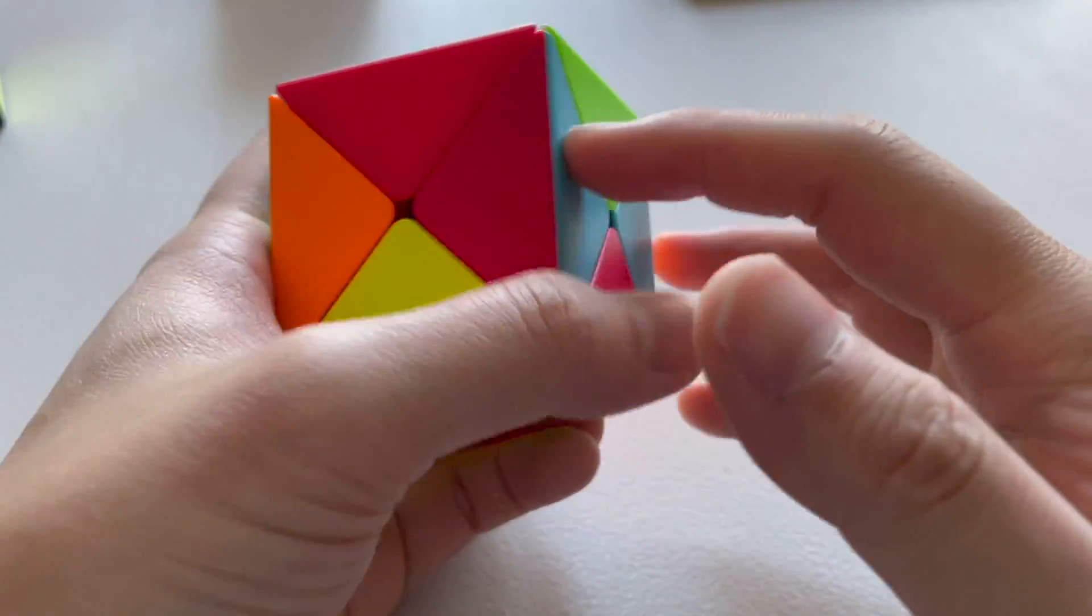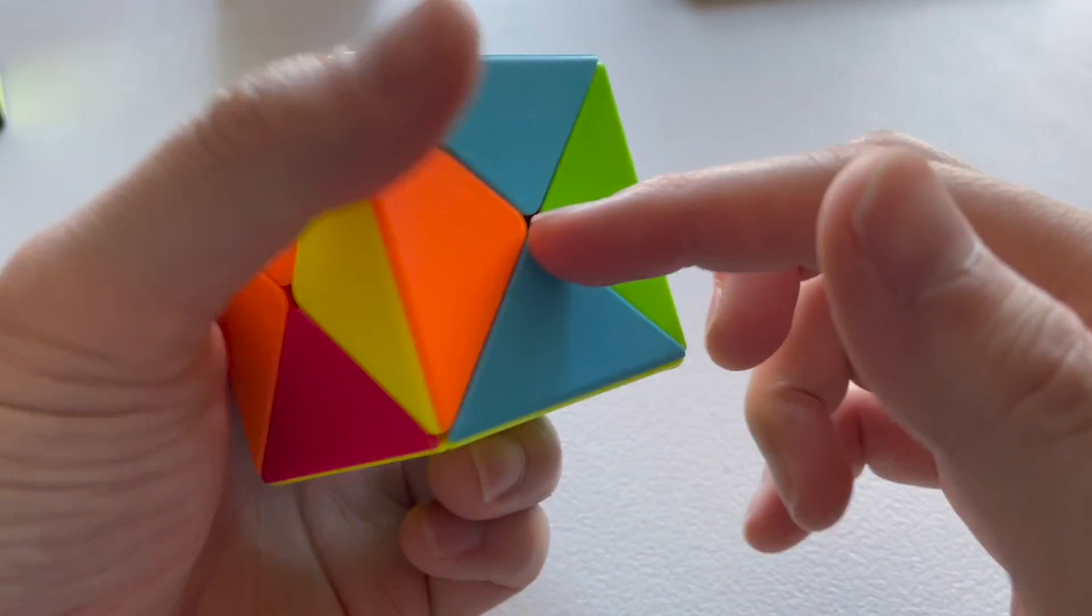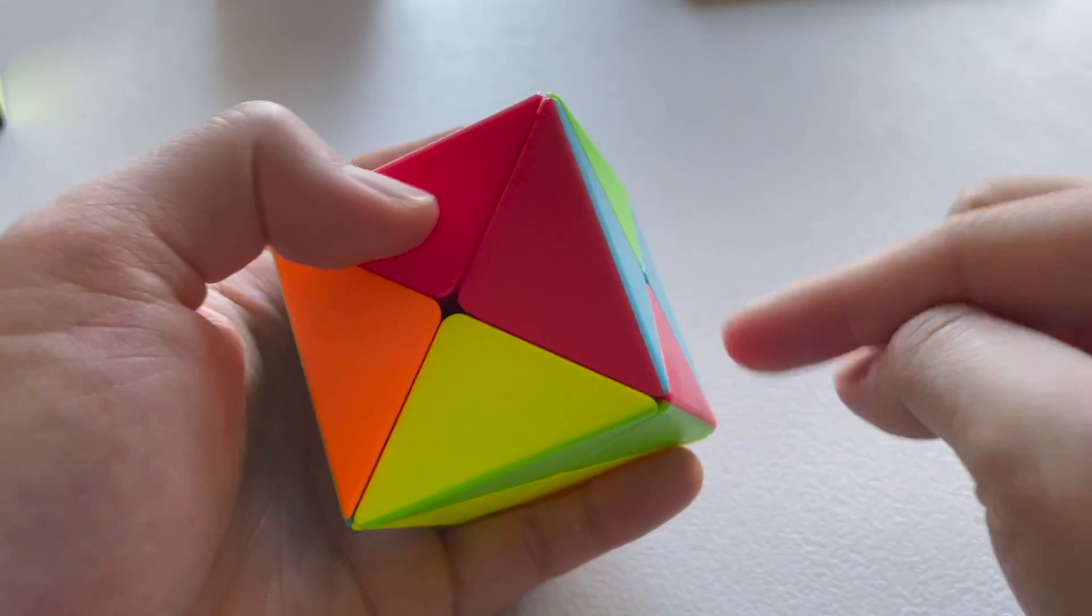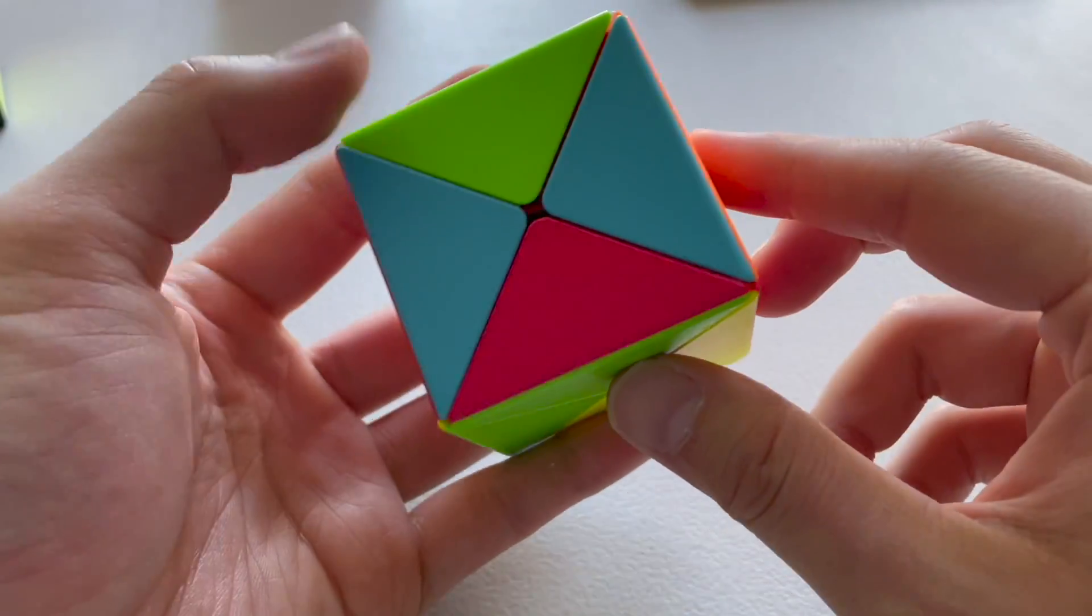So now that we have the top, we can proceed to build the second layer sides. This is pretty easy too. You can just kind of roll pieces around until they're in the right spot.